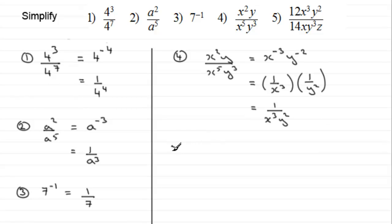Now number 5, we have 12 x cubed y squared, all divided by 14 x y cubed z. To simplify this, from the point of view of 12 and 14, 2 goes into both. We divide 2 into 12 giving us 6, and 2 into 14 gives 7.